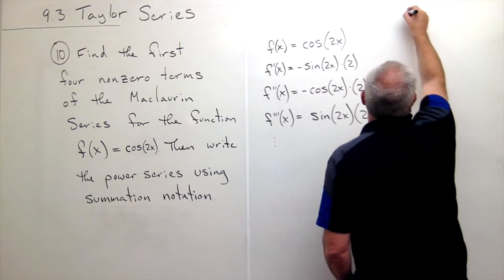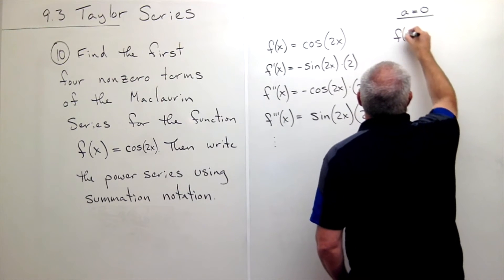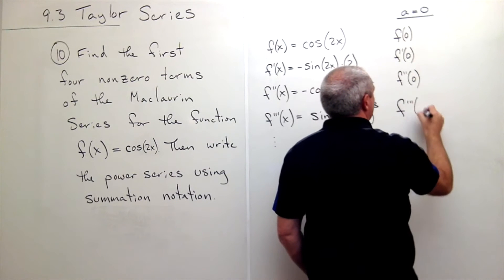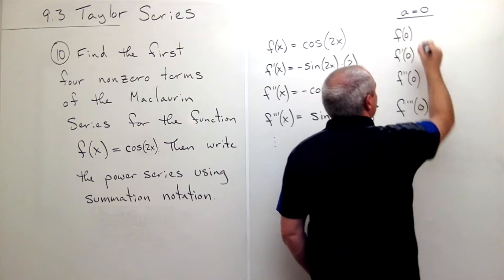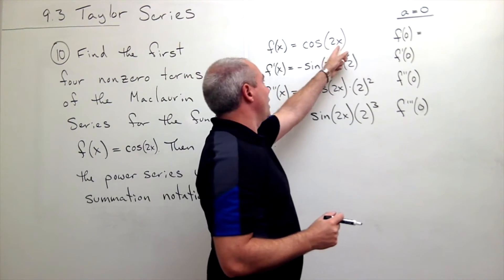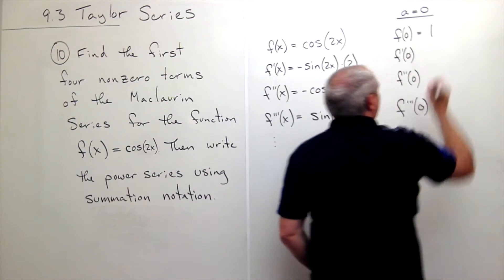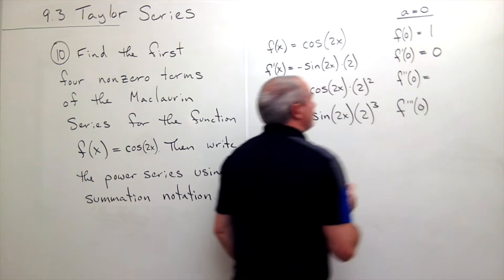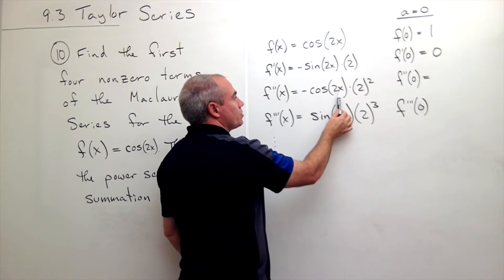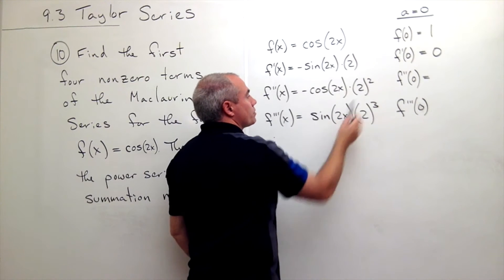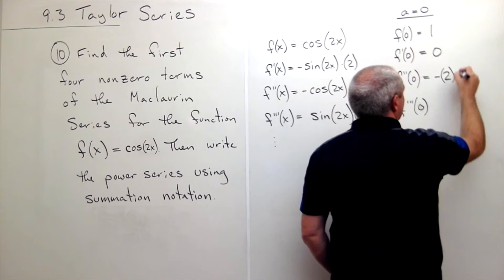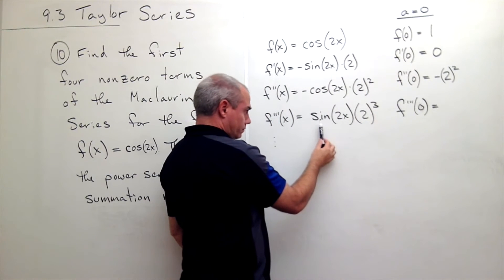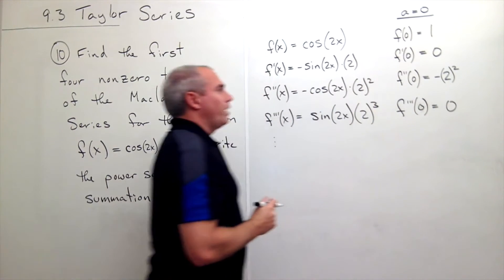We know that our a value is zero, so let's figure out f of zero, f prime of zero, f double prime of zero, and f triple prime of zero. Plugging in zero for x: cosine of zero is one. For f prime of zero, we get sine of zero, which is zero times 2 — still zero. For f double prime, cosine of zero is one, so we get negative one times 2 squared, or negative 2 squared. For f triple prime, sine of zero is zero, so we just get zero.